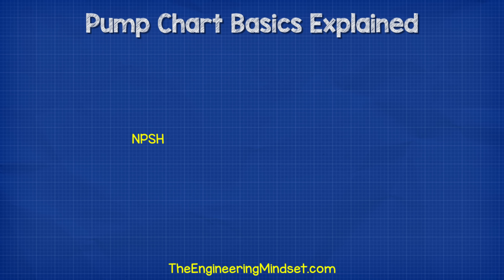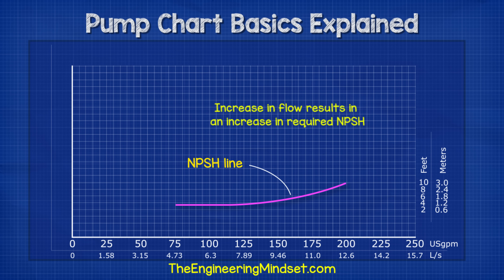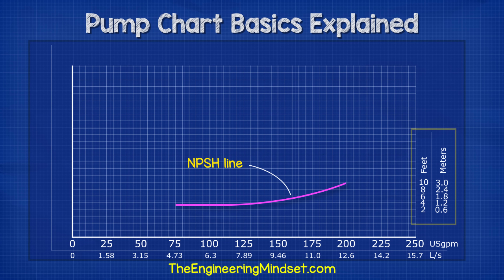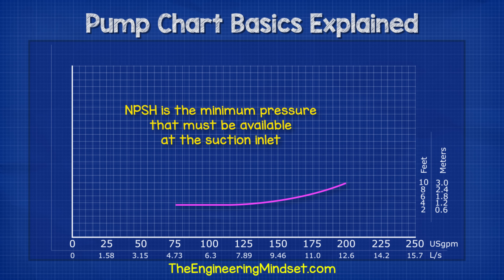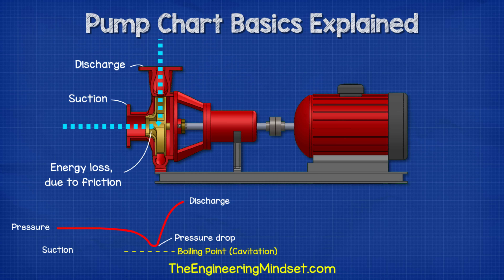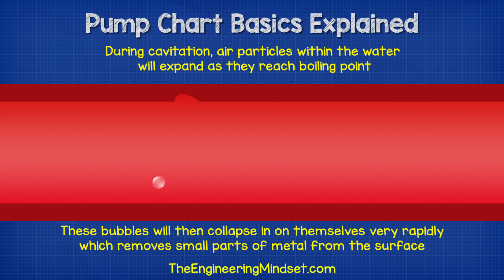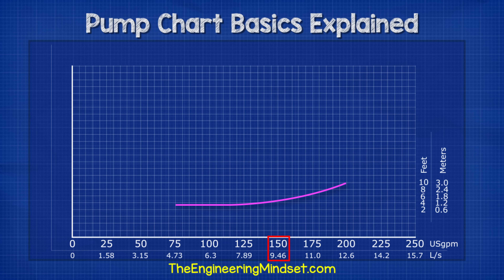NPSH — this is the required NPSH, or net positive suction head pressure. This usually has an upward curve, which means as the pump flow rate increases, we see the NPSH value also increases. We measure this in meters or feet, sometimes kilopascals. The NPSH is the minimum pressure that must be available at the suction inlet of the pump to overcome the entrance losses and avoid cavitation. The available pressure at the inlet must therefore be greater than this value. Pump cavitation is where the pressure at the inlet of the pump reaches a low enough point that the water begins to boil, creating rapidly expanding and collapsing air bubbles which will gradually destroy the surface of the pump and the casing. For this example, if we were to move 150 gallons per minute, then we would require an NPSH value of around 4.9 feet.